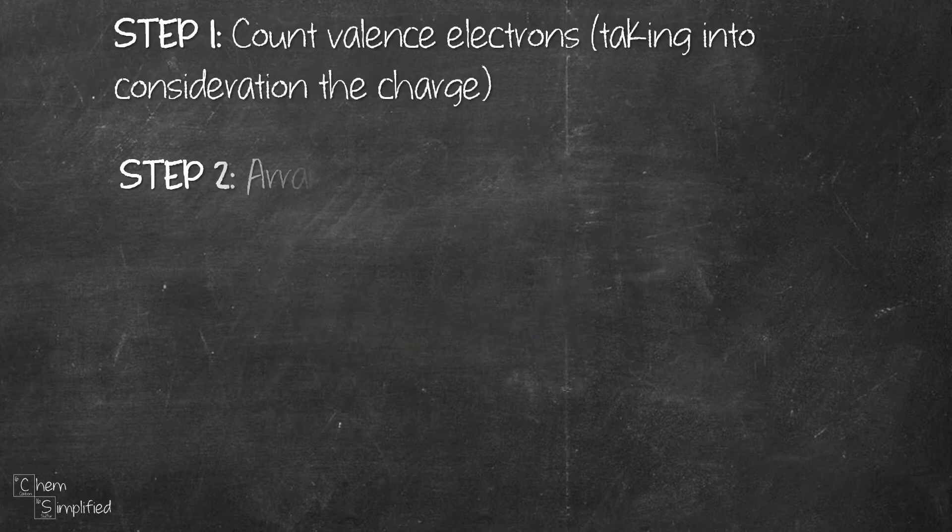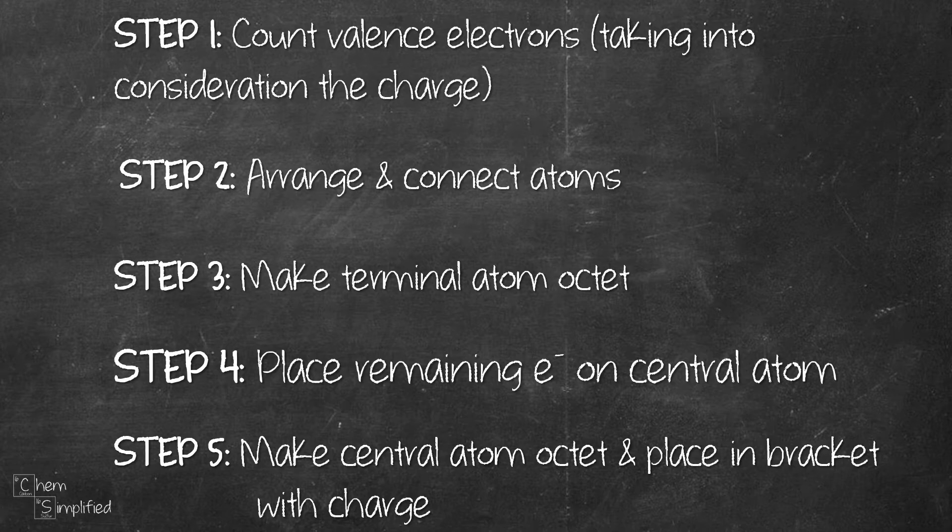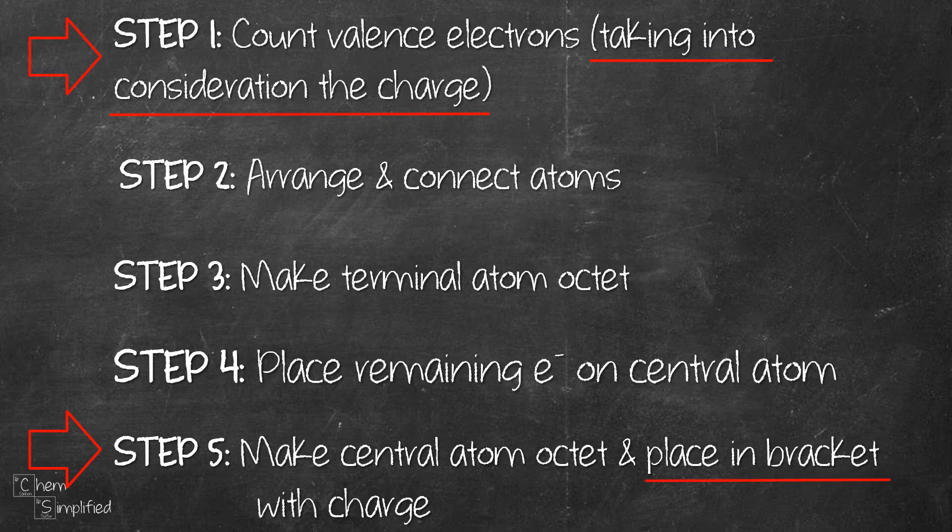To recap, here are the five steps we use to draw the Lewis structure for polyatomic ion. It's basically the same as drawing Lewis structure for compound. Except for step 1, we also need to add in or subtract the electrons. And in the final step, step 5, we need to also add in the bracket along with the charge.